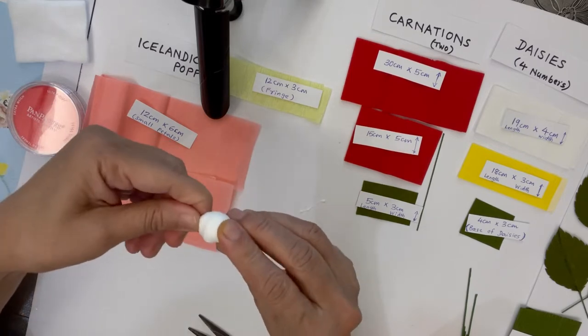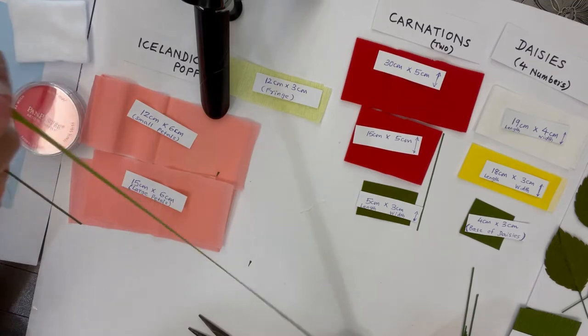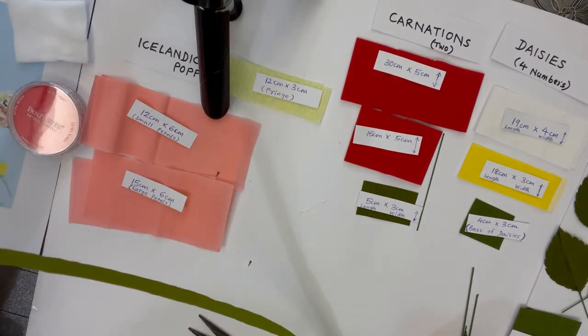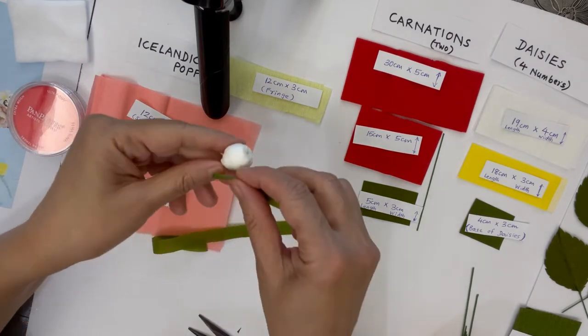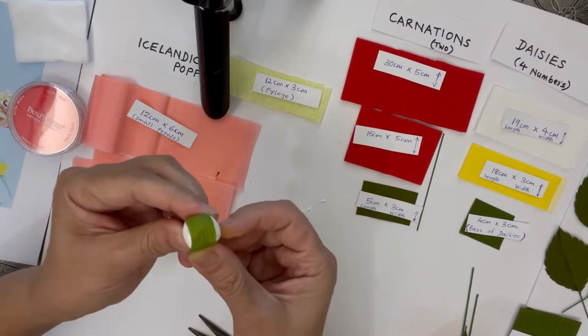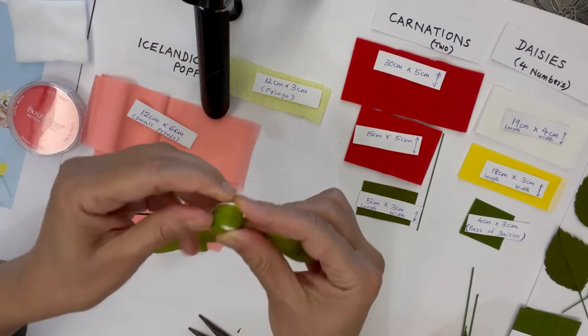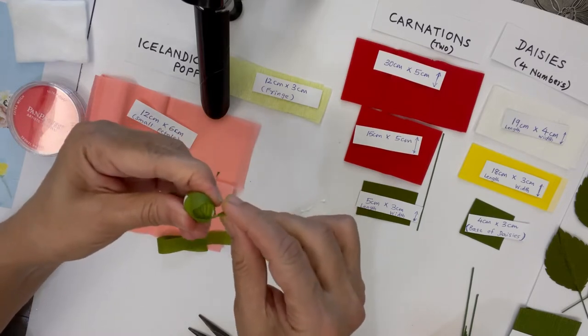Once this is done, I normally use green floral tape to cover up the white portion.